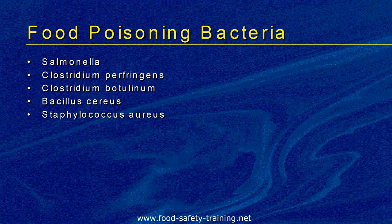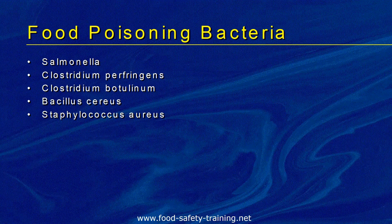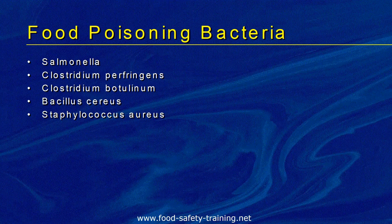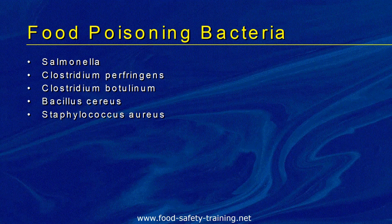Looking at some food poisoning bacteria — you don't need to remember how to spell these for the exam. Salmonella is a big cause of food poisoning; there are about two and a half thousand different types, some named after the places where they were discovered, such as Salmonella Cardiff. Then there are two types of clostridia: Clostridium perfringens and Clostridium botulinum. Clostridium botulinum produces the world's most dangerous toxin — a neurotoxin that can kill within two minutes.